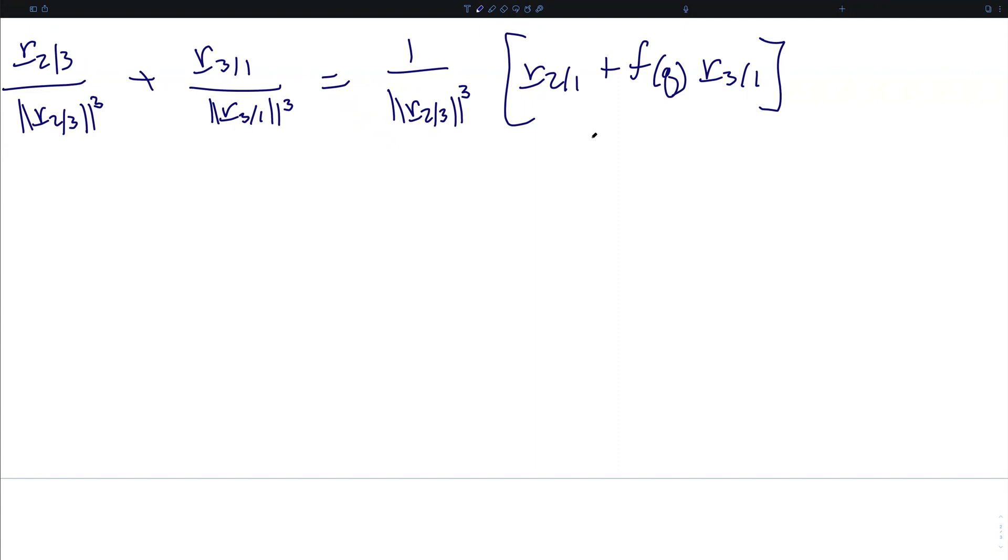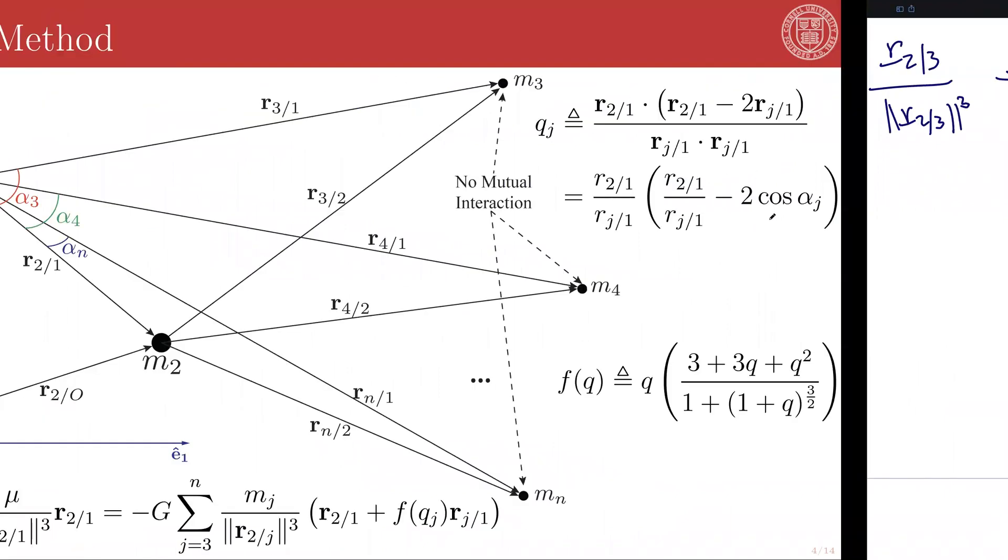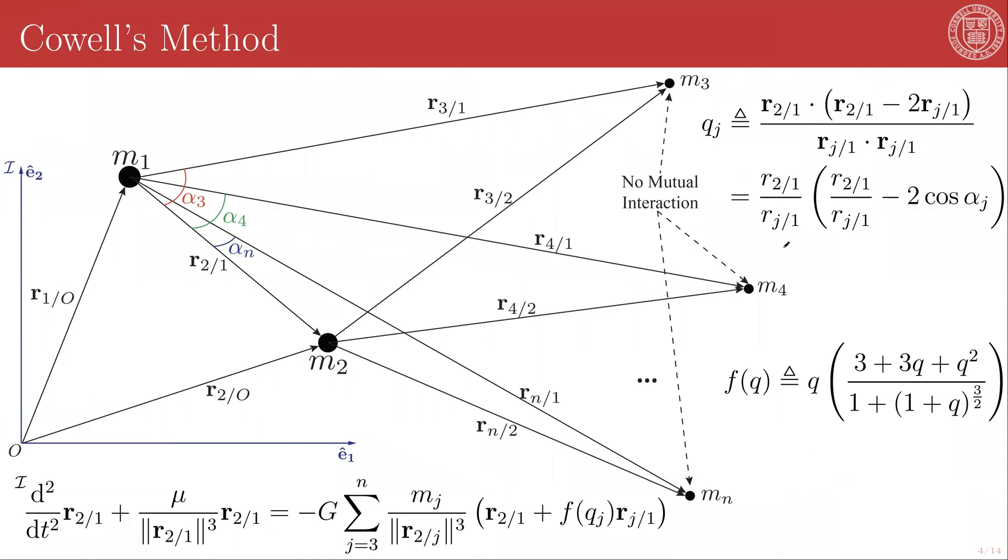What this buys us is that we are explicitly now avoiding that subtraction of two increasing quantities. As the distance of the third body, or in general, the jth perturber from the central body grows, this q term becomes a ratio of something that is bounded to something that's growing. So a small quantity times that same exact ratio, so another small quantity minus two times cosine of an angle, which is strictly bounded between negative one and one. And this f of q function is just summations of something that is a small quantity. So we have absolutely bounded numerically the rate at which any individual quantities in our differential equations can grow.